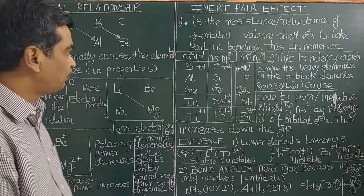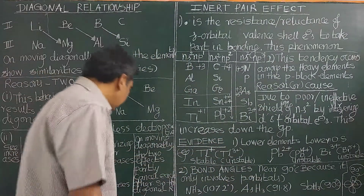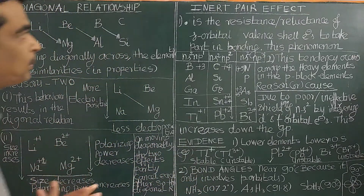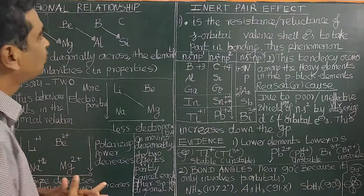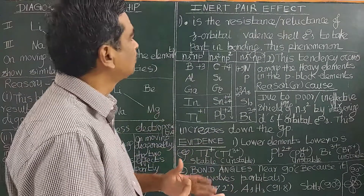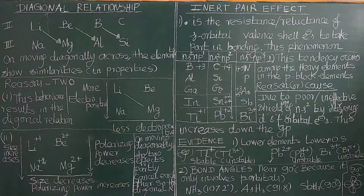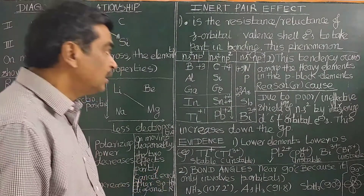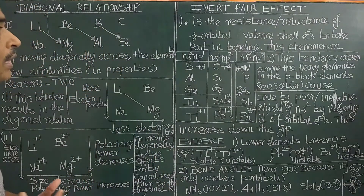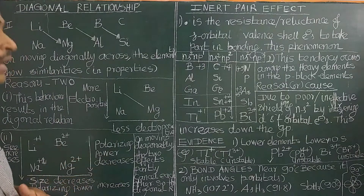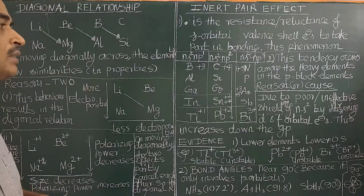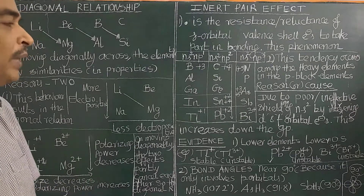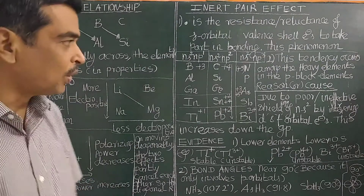Today we have seen the diagonal relationship — what it is, what is inert pair effect, what are the causes of diagonal relationship, what are the causes of inert pair effect, and we have also seen evidences for inert pair effect. These are very, very fundamental topics. They will ask in various competitive examinations. Please understand so that you can answer any type of questions asked in competitive examinations. Thank you for watching.